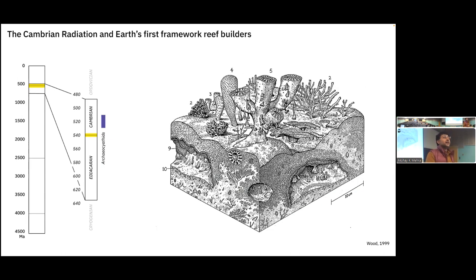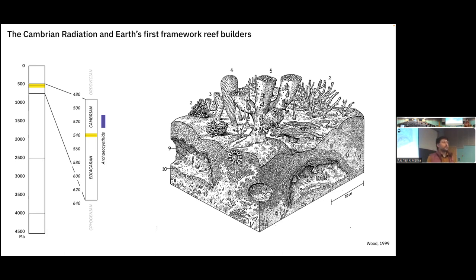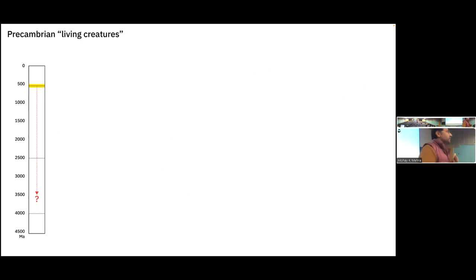Among these animals were the archaeocyathid sponges — calcifying organisms that built Earth's first framework reefs. I'm showing a reconstruction by Rachel Wood from 1999. I really like this reconstruction because it demonstrates many aspects of framework reefs: not only are they rigid constructions of sponges growing upwards and adding topographic relief, but they also have little nooks and crannies — little refugia in which other organisms might be living and evolving. But were archaeocyathids truly the first framework reef builders?